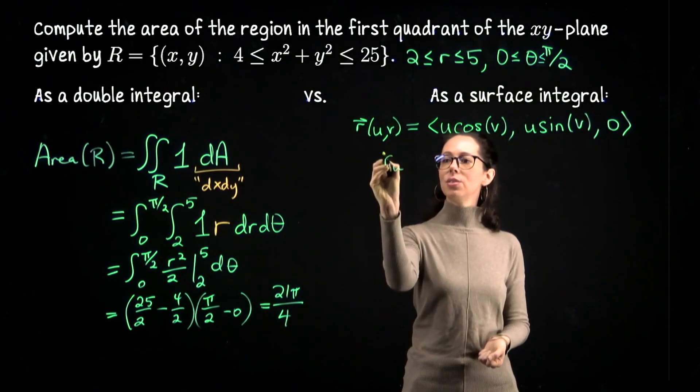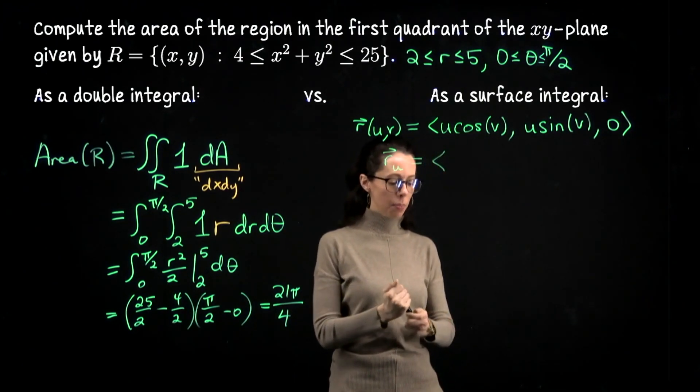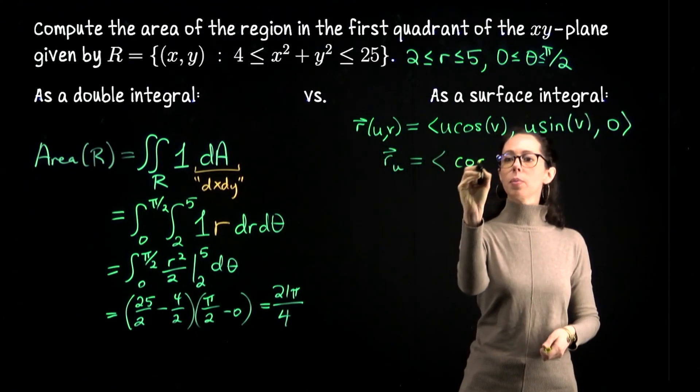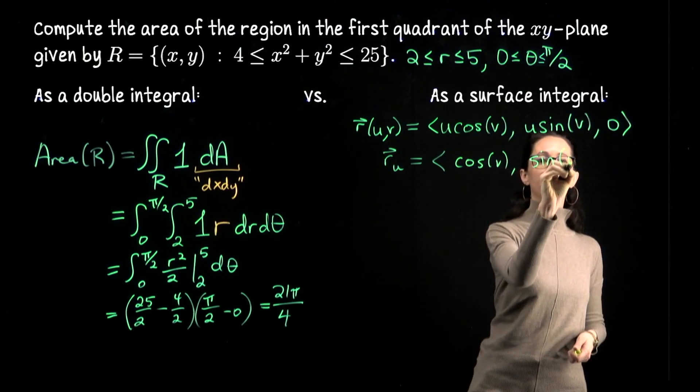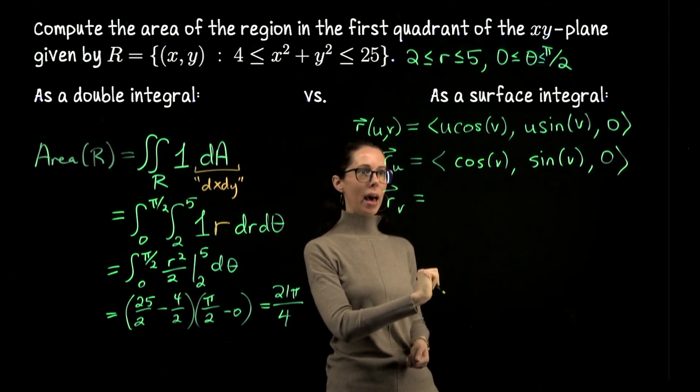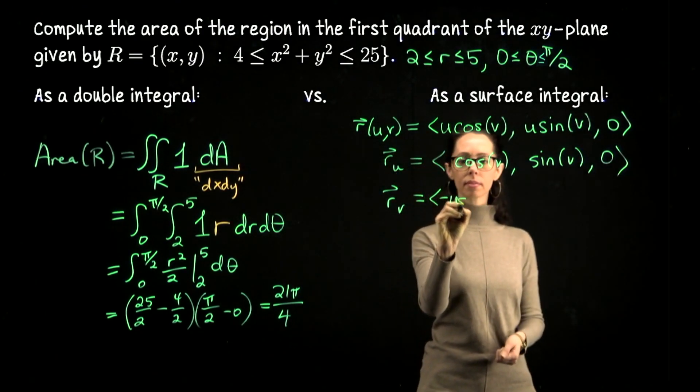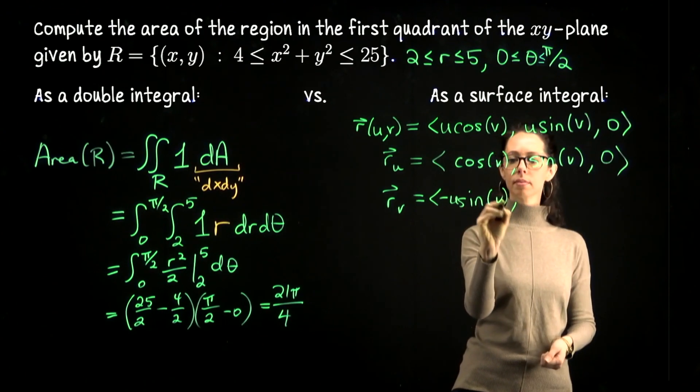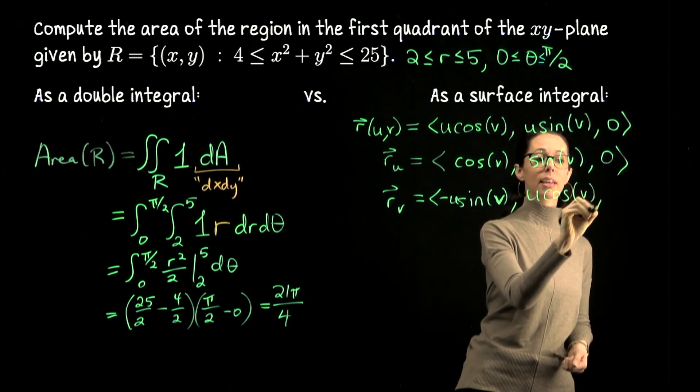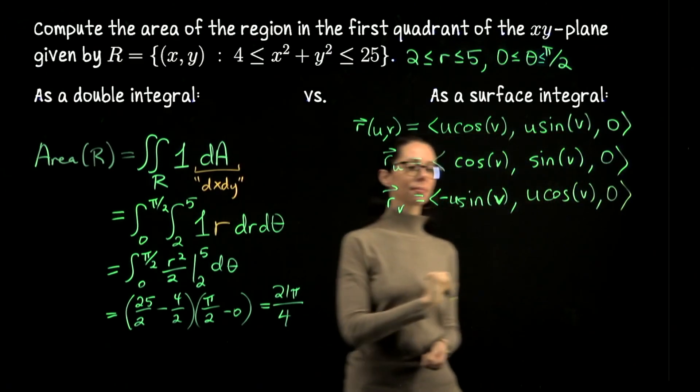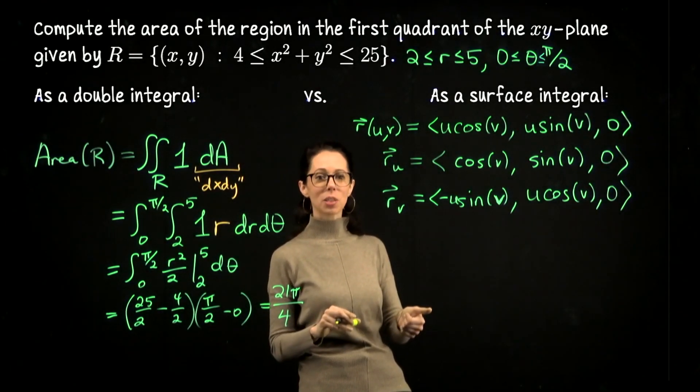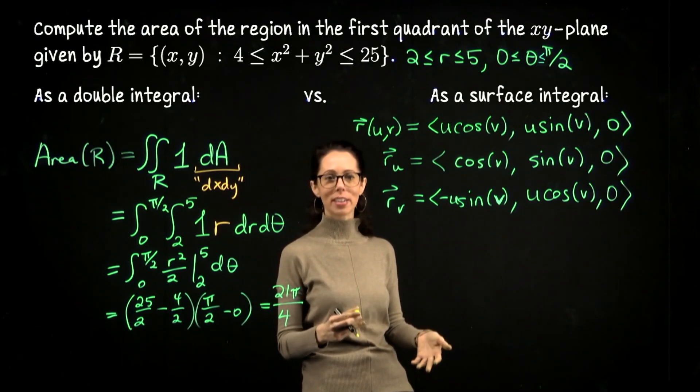Let's do the vectors r_u and r_v. That means take the partial derivative of each of these components with respect to u and then with respect to v. So that's going to be ⟨cos v, sin v, 0⟩. And then for the second one we will have ⟨-u sin v, u cos v, 0⟩. Both of these vectors live flat in the plane, so when we take the cross product it's going to point either straight up or straight down, as it should, because it should be perpendicular to the surface.